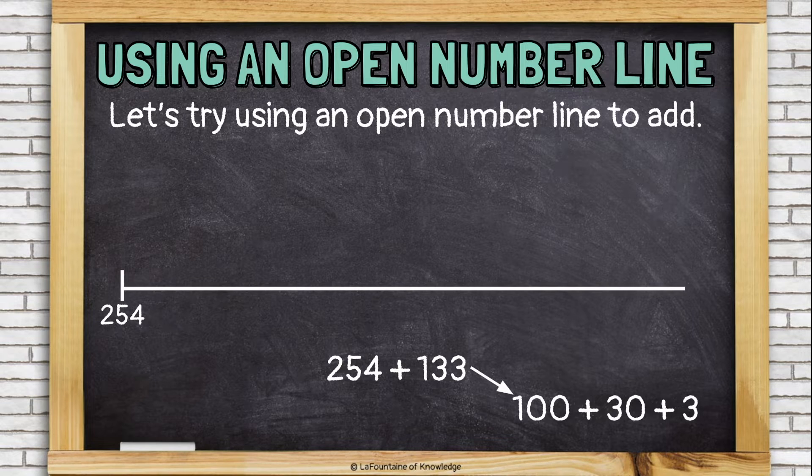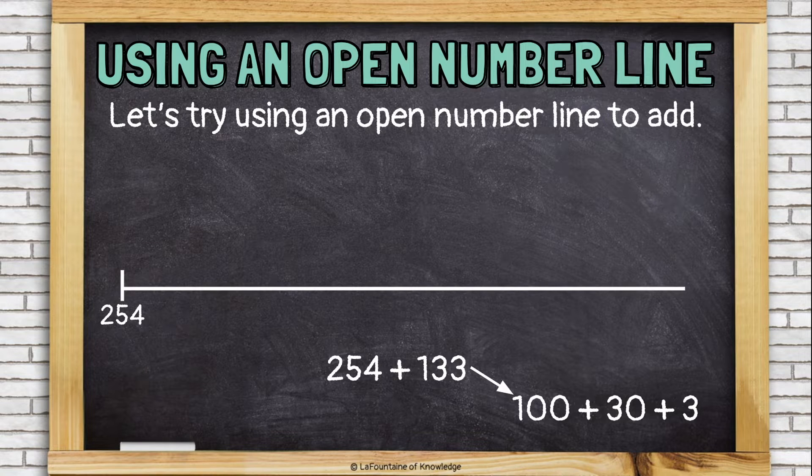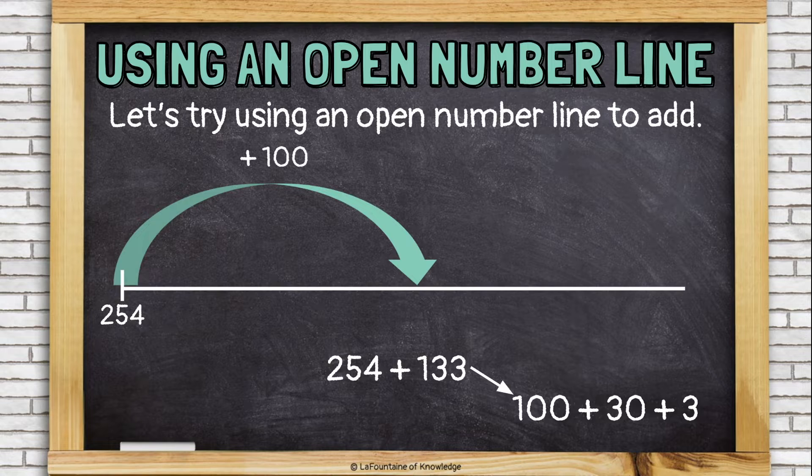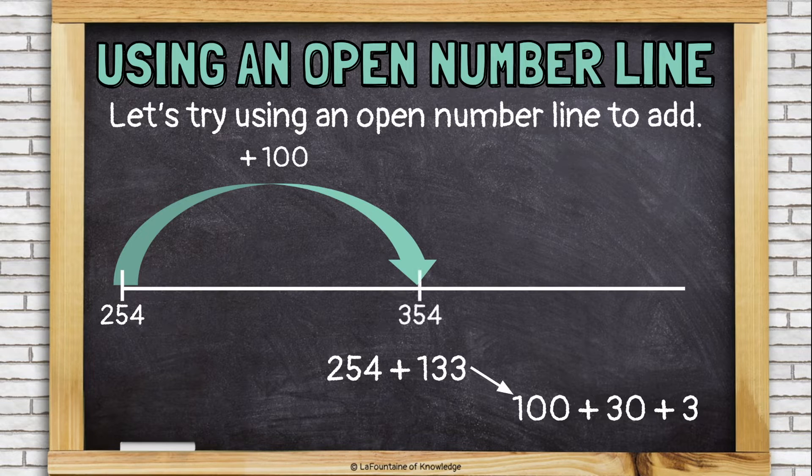Now I can add these smaller numbers in chunks to the bigger number that I started with. Let's add 100. 254 and then I'll jump forward or add 100 and where do I land? I land at 354.